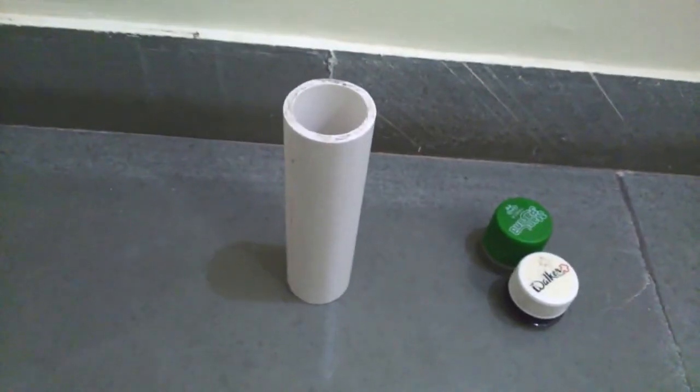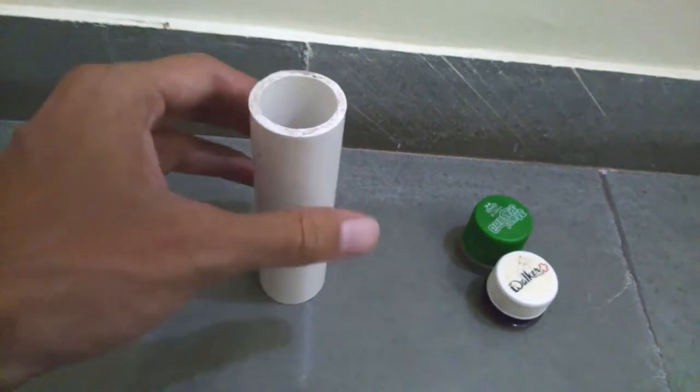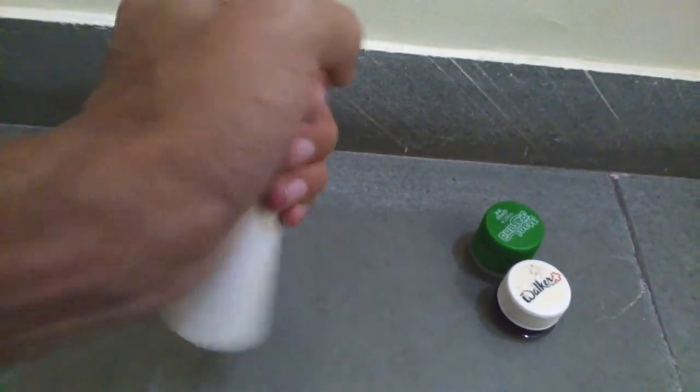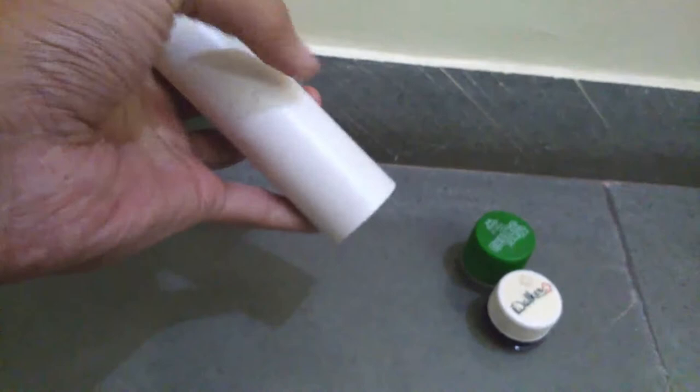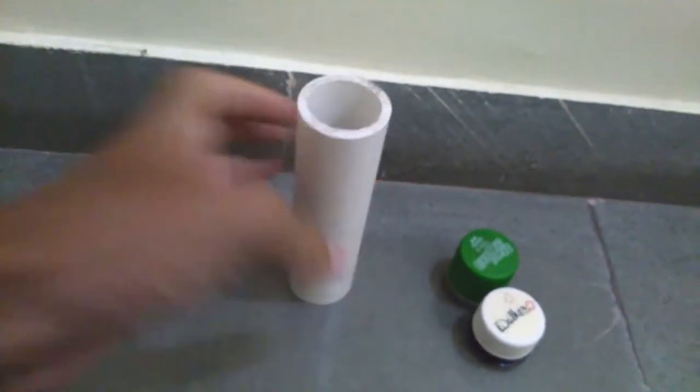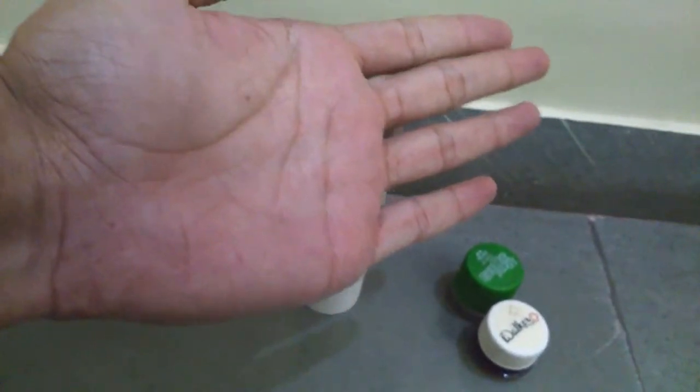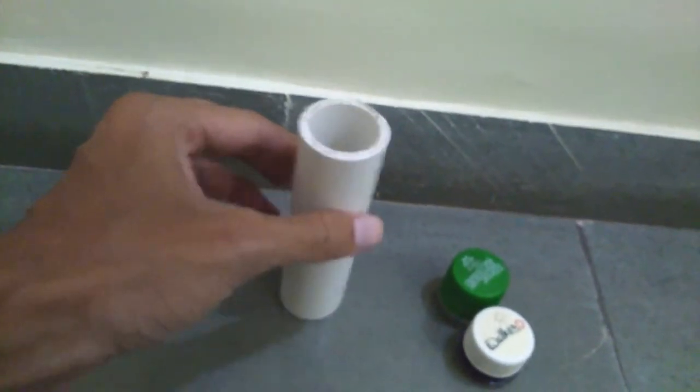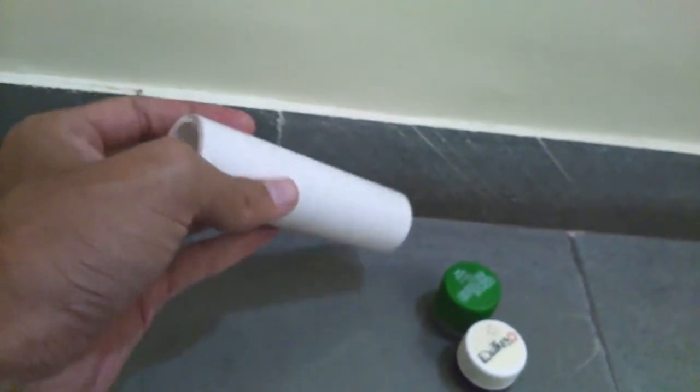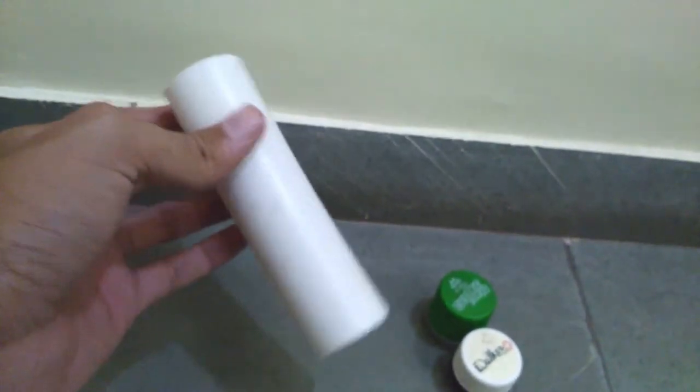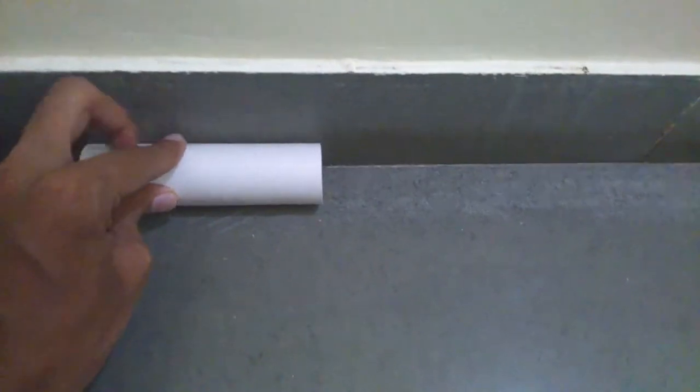The length of the pipe you are going to require should be three centimeters more than your width of palm. So measure it, add three centimeters to it, and that's the size of the pipe you need. Cut the pipe as straight as possible.